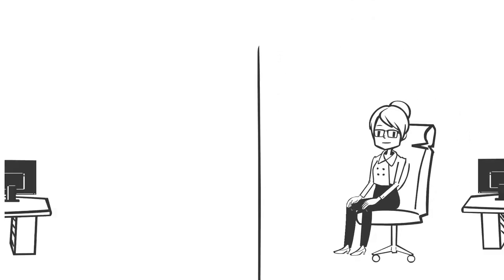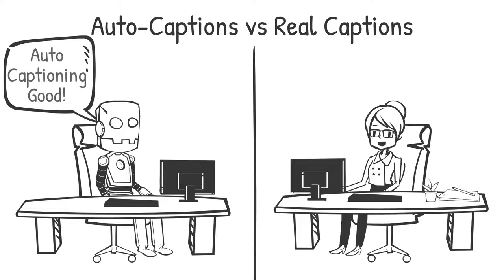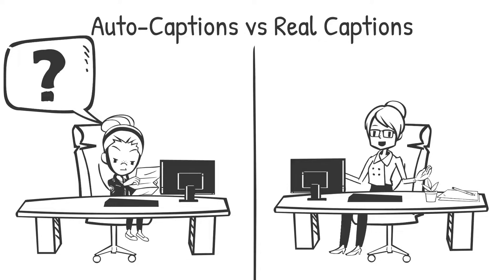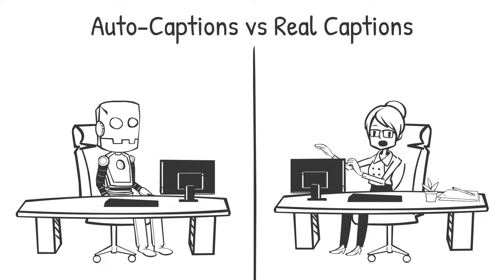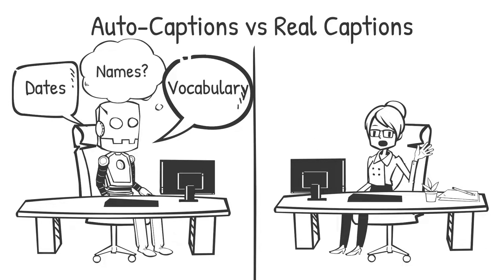Let's talk about auto captions. They're getting good — really good. But the places where they are not good really matters. Auto captions don't understand context at all, so the machine algorithm is worse at guessing the right word than a six-year-old learning to read. Auto captions are not going to handle three critical types of information well: dates, vocabulary, and people's names.